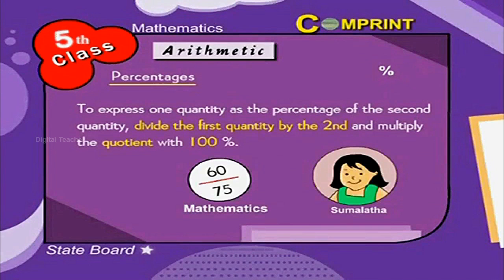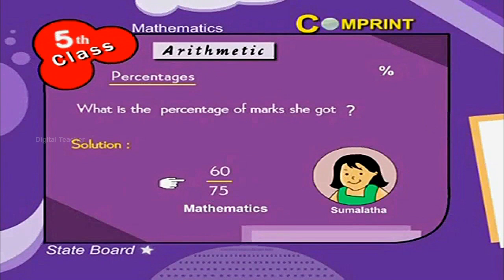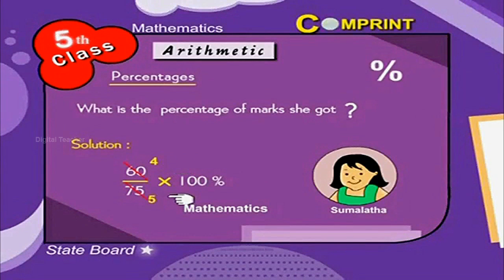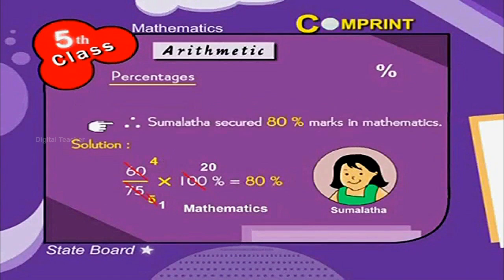For example, Sumulatha secured 60 out of 75 marks in mathematics. What is the percentage of marks she got? Here is the solution. Mark secured by Sumulatha can be written as 60 by 75. So we have to write like this: 60 by 75 into 100%. 15 4s are 60, 15 5s are 75. Again, 5 1 is 5, 5 20s are 100. Now we multiply 4 into 20 is equal to 80%. Therefore, Sumulatha secured 80% marks in mathematics.